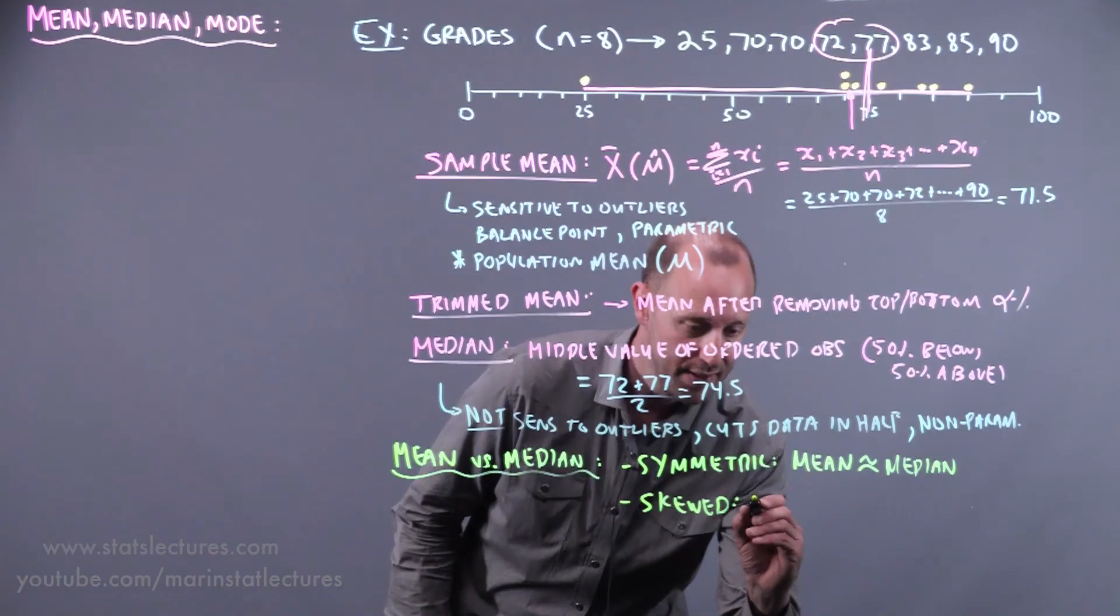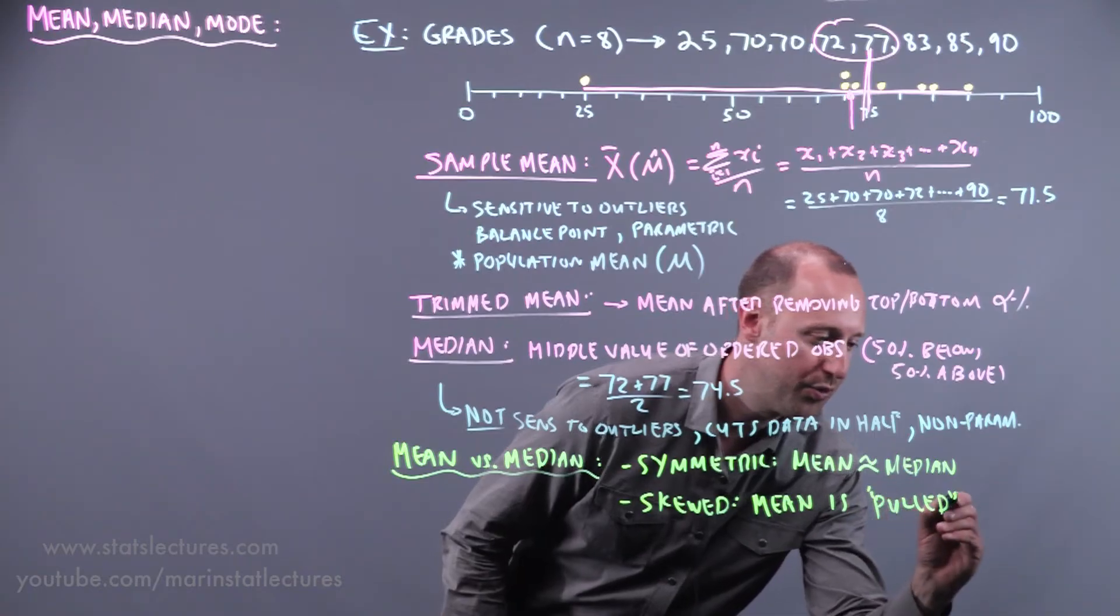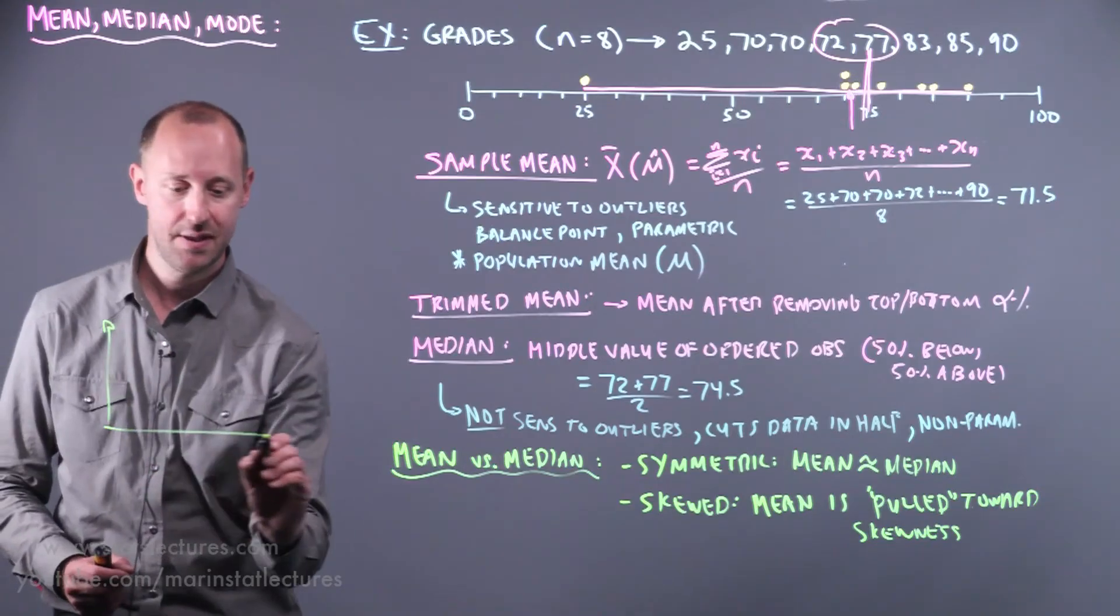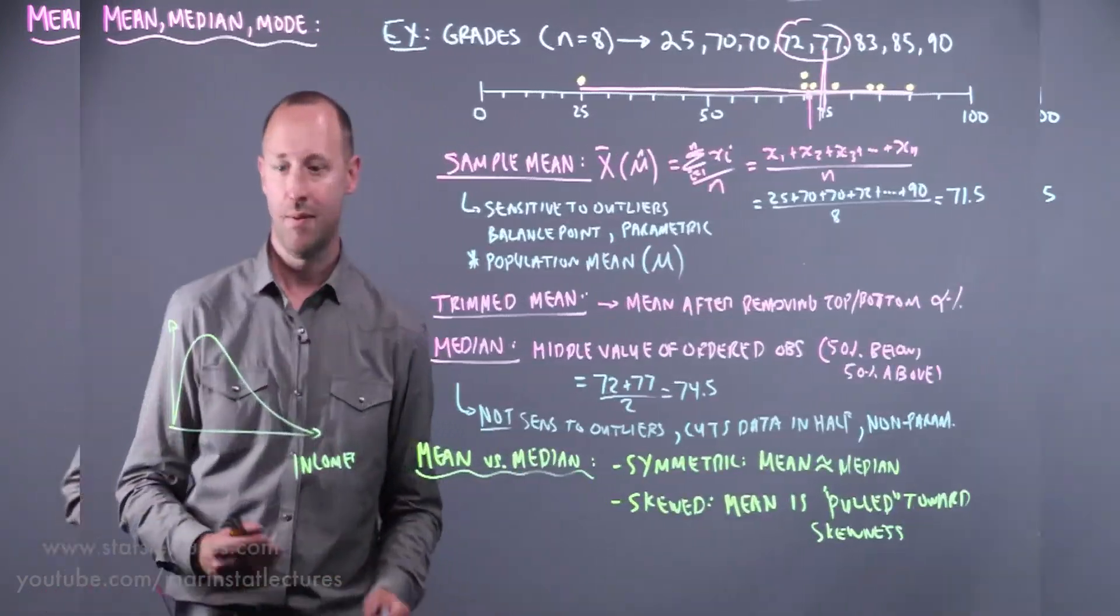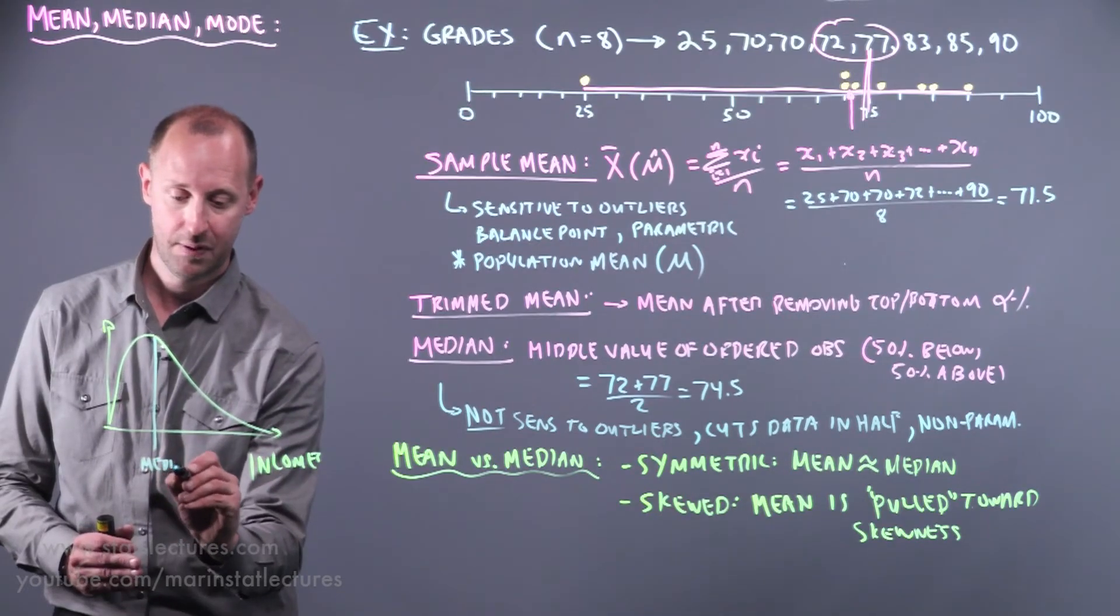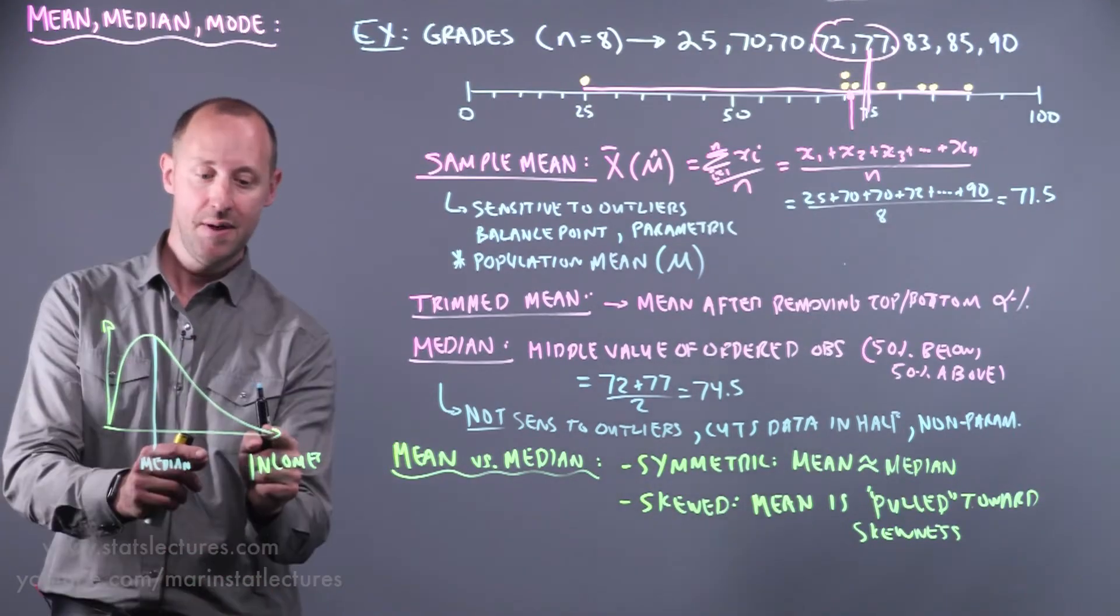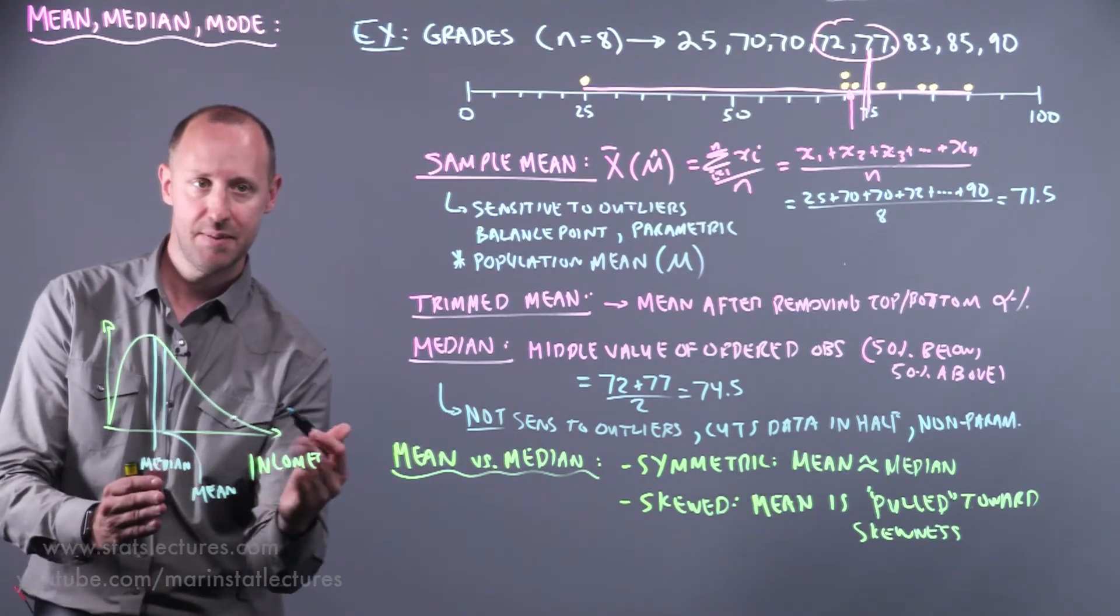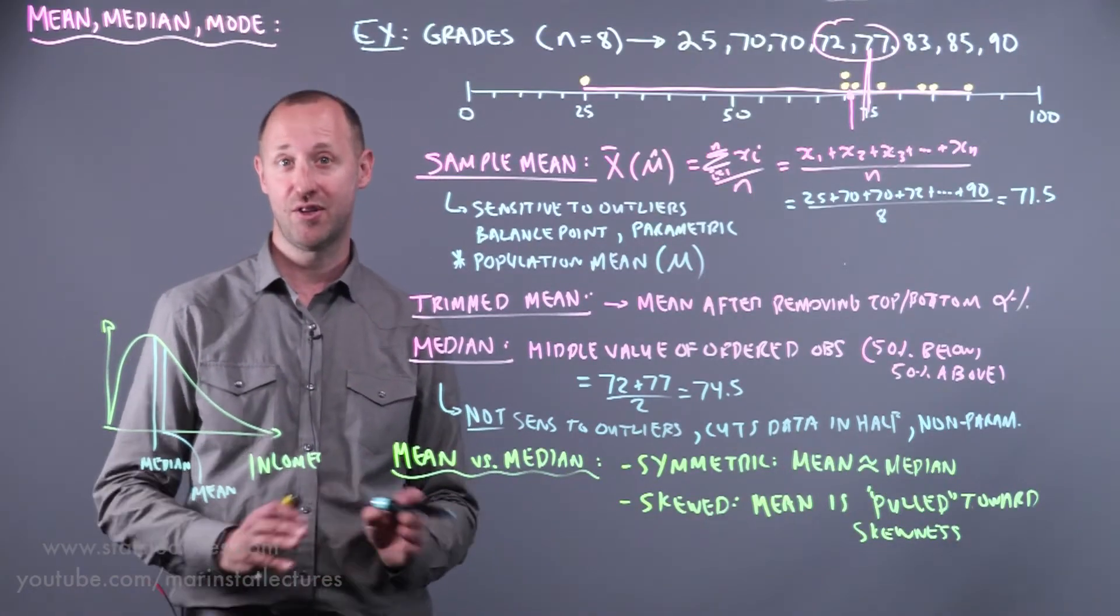If it's skewed, if the distribution is skewed, the mean is kind of, I like to use the word pulled. That's the way I think of it. It's pulled towards the skewness. We talked previously about the idea of incomes and how these often have a skewed right distribution. When thinking about a distribution that's skewed to the right, the median is this value that cuts the data in half. Roughly 50% of the area below, 50% above. Because of these large values, the mean is going to get pulled by those. And the mean ends up being a little bit larger than the median or getting pulled towards that skewness.